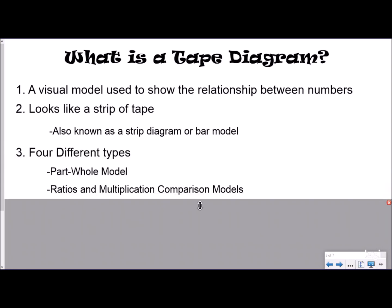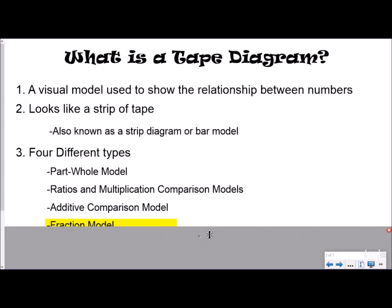It's also known as a strip diagram or a bar model, and there are four different types. There's a part-whole model, ratios and multiplication comparison models, additive comparison models, and the fraction model. Today we're going to focus on the fraction model. We focused on the other three in our whole number and decimals video, which we would love for you to check out.